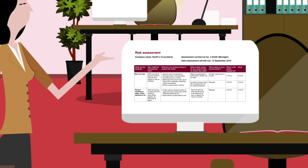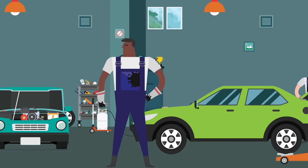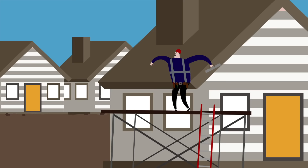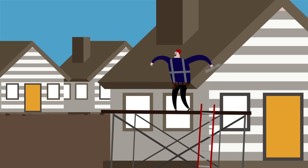Review what you're doing to control risk whenever there are significant changes, like new staff or equipment. You should also review your controls if your workers spot a problem, or after any accidents or near misses. Update your records with any changes you make. Remember, protecting people is about what you do to control risks, not the forms you fill in.